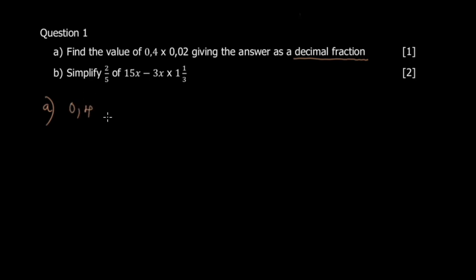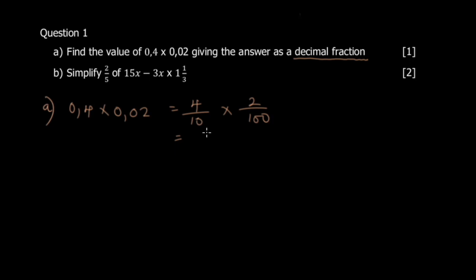We have 0.4 × 0.02. Write 0.4 as 4/10 and 0.02 as 2/100 — notice the zeros in the denominator correspond to the number of decimal places. Then multiply the numerators and the denominators: you get 8/1000. Avoid cancelling anything here because the point is to keep a power of ten in the denominator. So the answer is 8/1000, which is a decimal fraction.